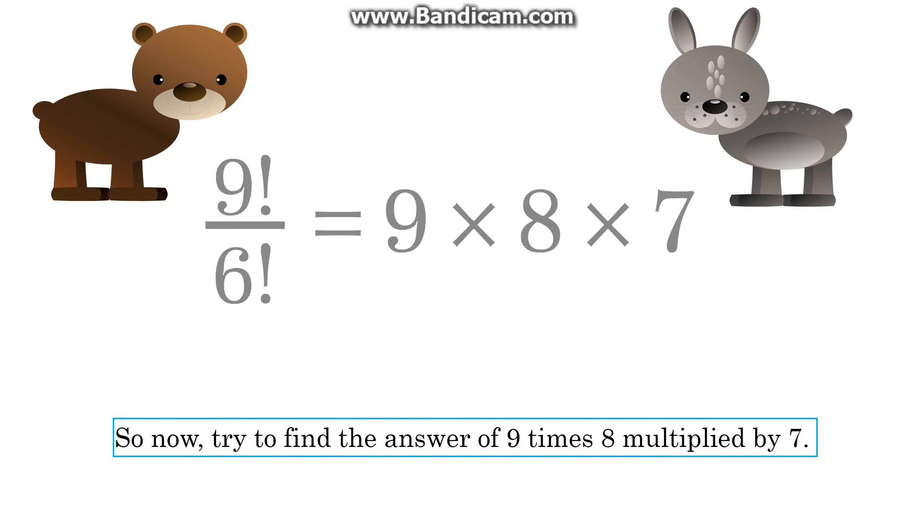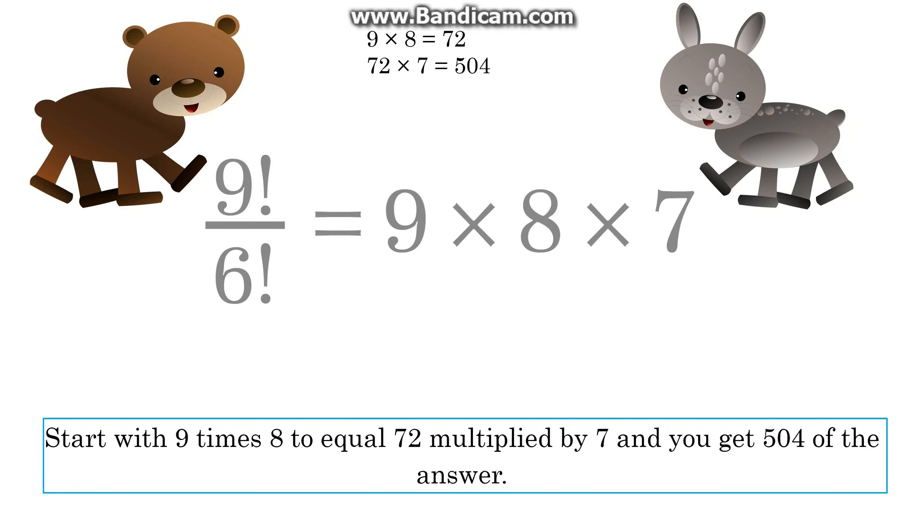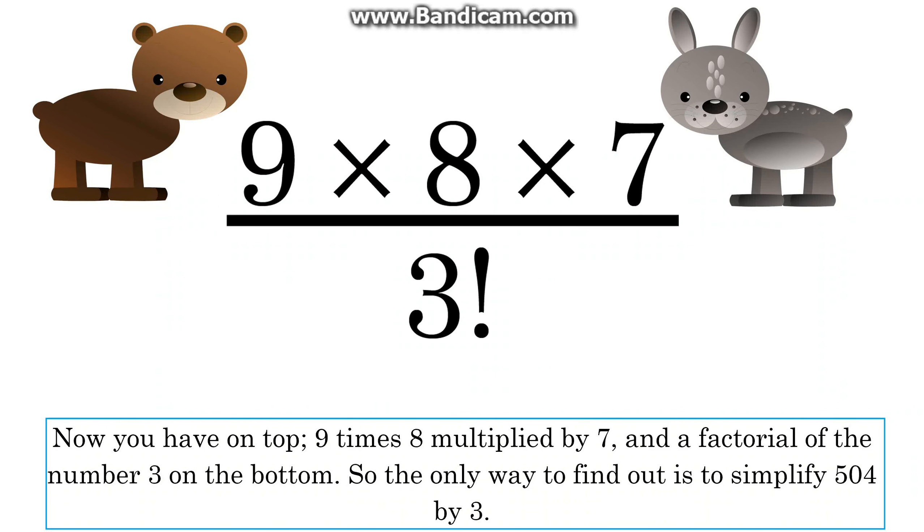So now, try to find the answer of 9 times 8 multiplied by 7. Start with 9 times 8 to equal 72, multiplied by 7, and you get 504 as the answer. Now you have on top 9 times 8 multiplied by 7, and a factorial of the number 3 on the bottom.